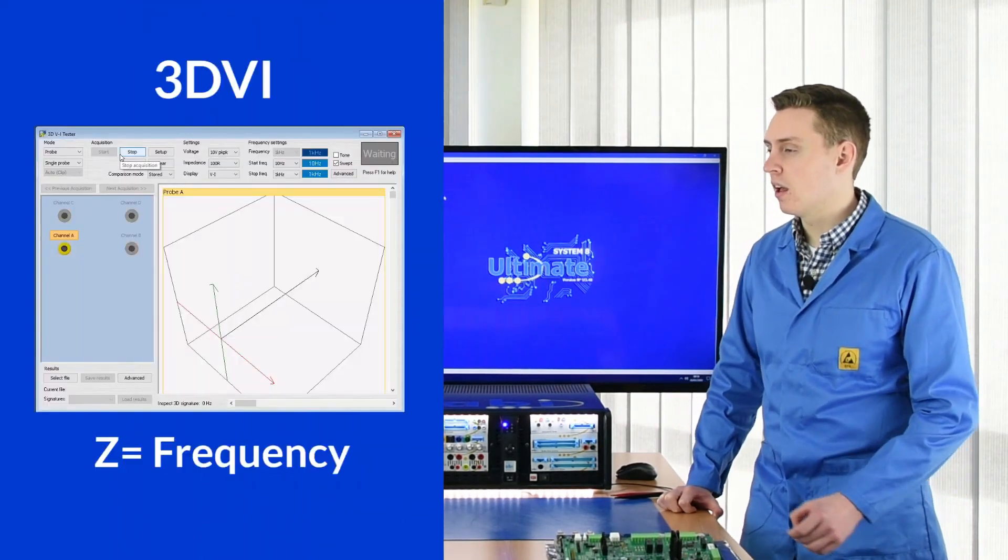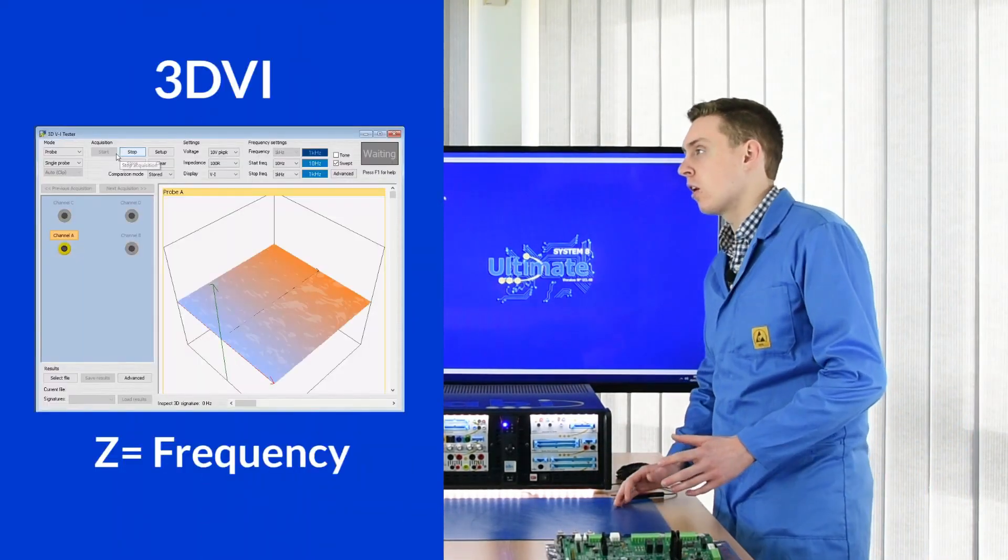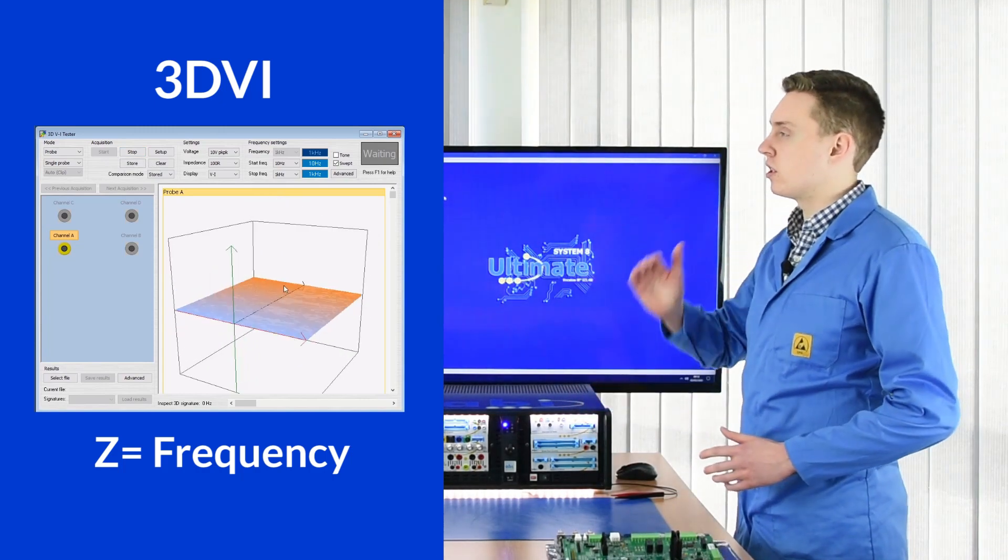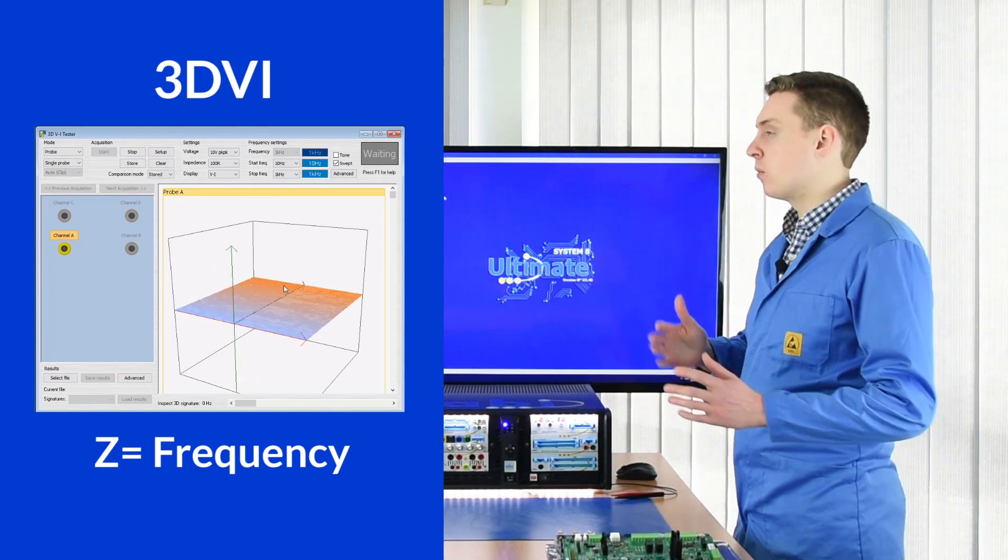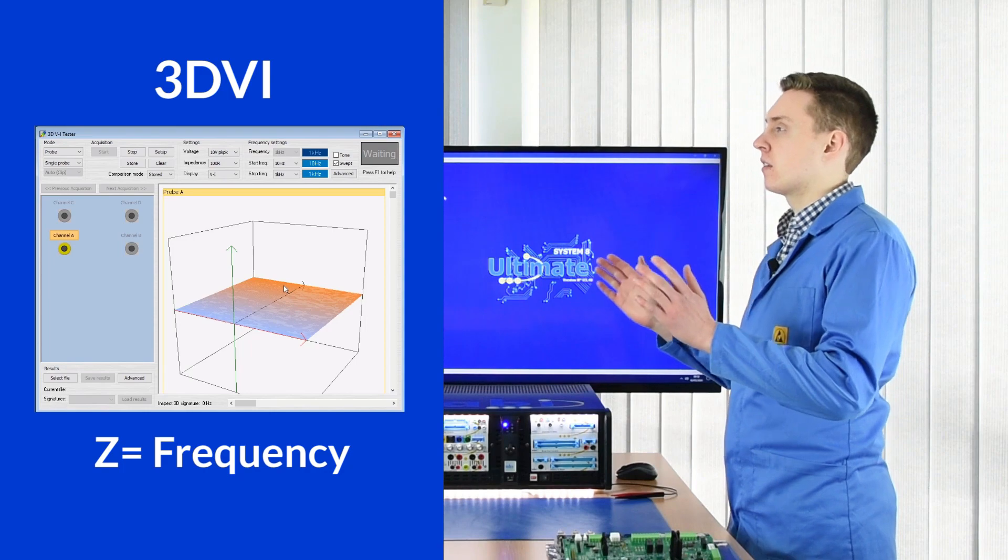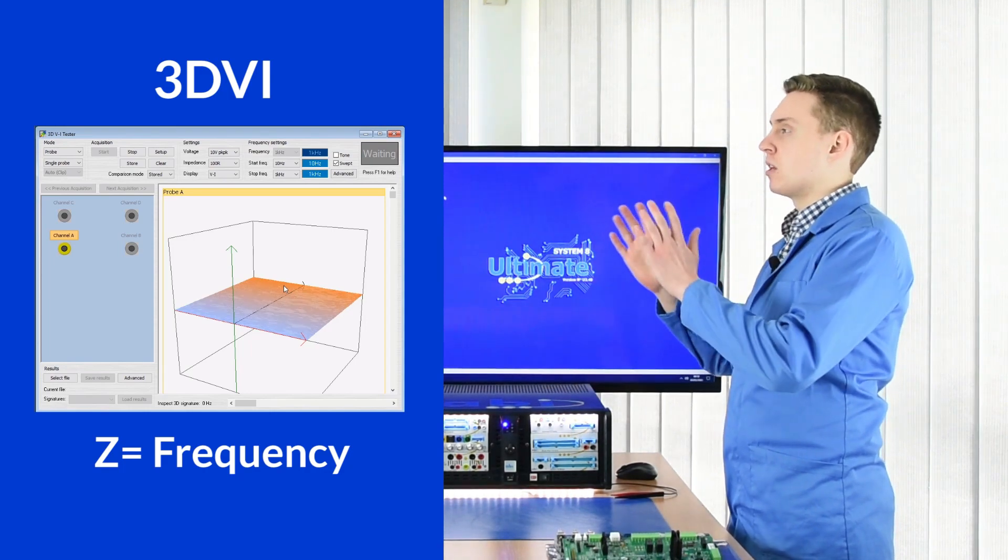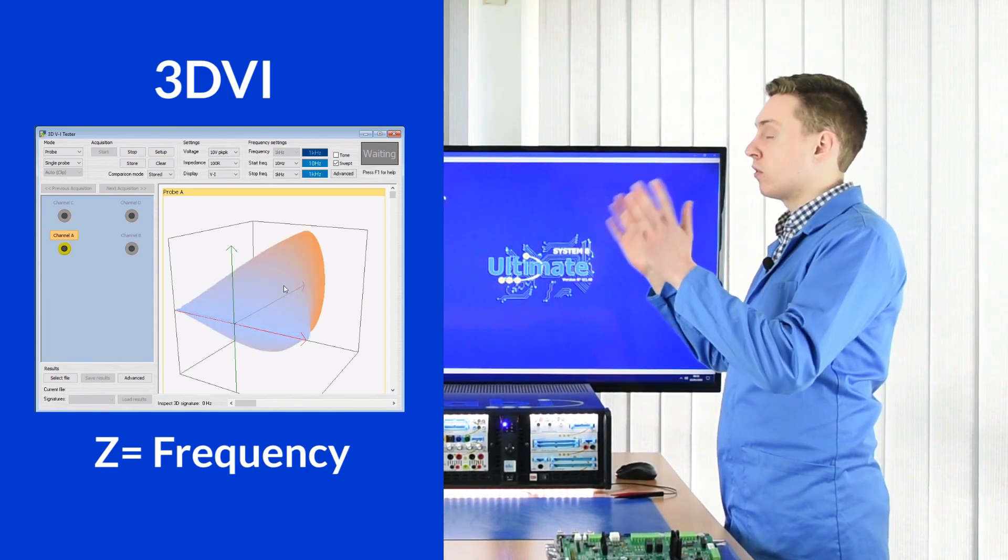So Oliver, can you explain 3DVI for us? Absolutely. Last episode we talked about 2DVI which, as the name suggests, is voltage against current. This time 3DVI we're adding that extra axis, that z-axis for that 3D image, and that z-axis is frequency.